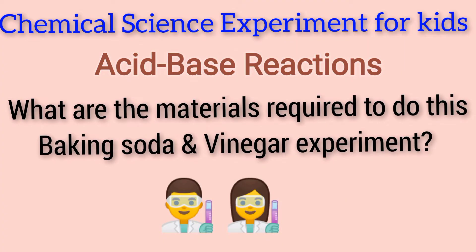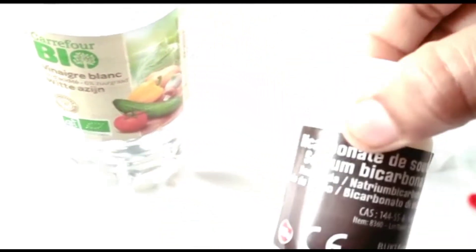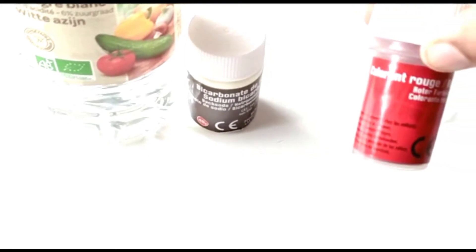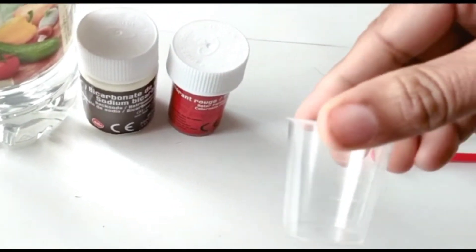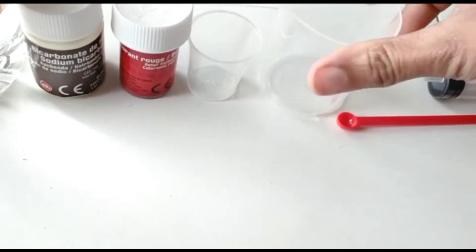At first, let us quickly watch what materials we require to do this simple baking soda and vinegar experiment. We need white vinegar, baking soda, food coloring, a small beaker and a large beaker, a measuring spoon, and a syringe.